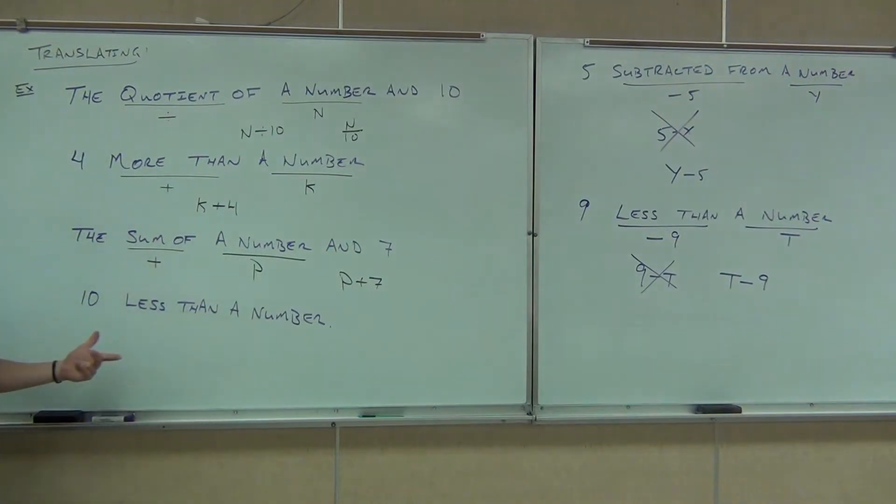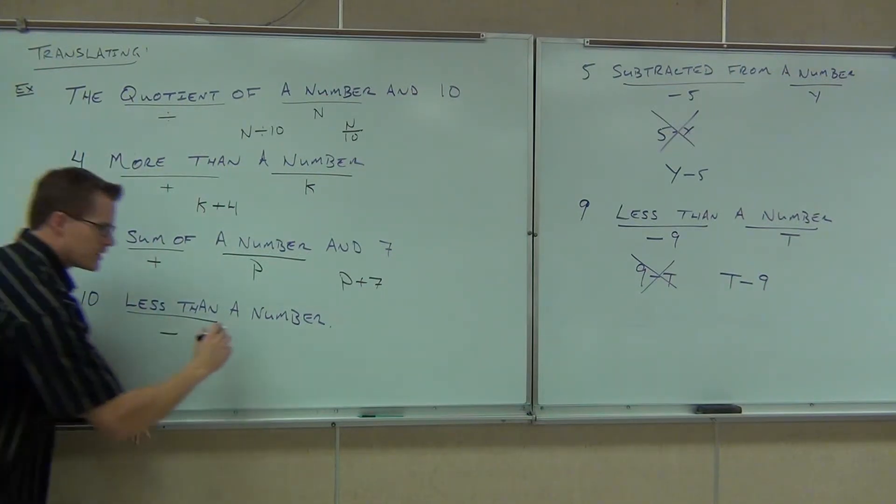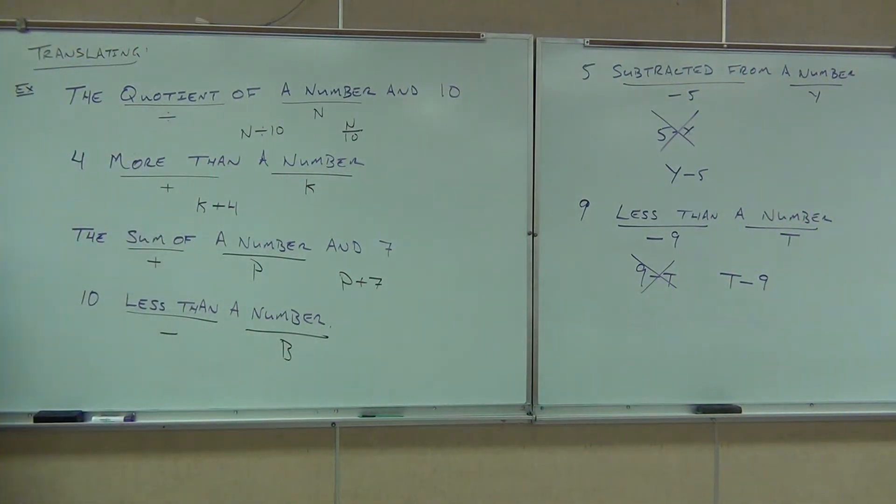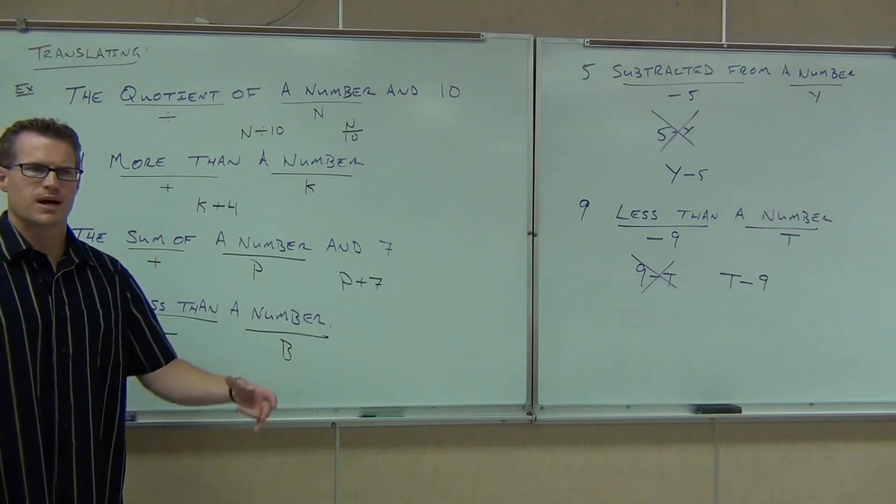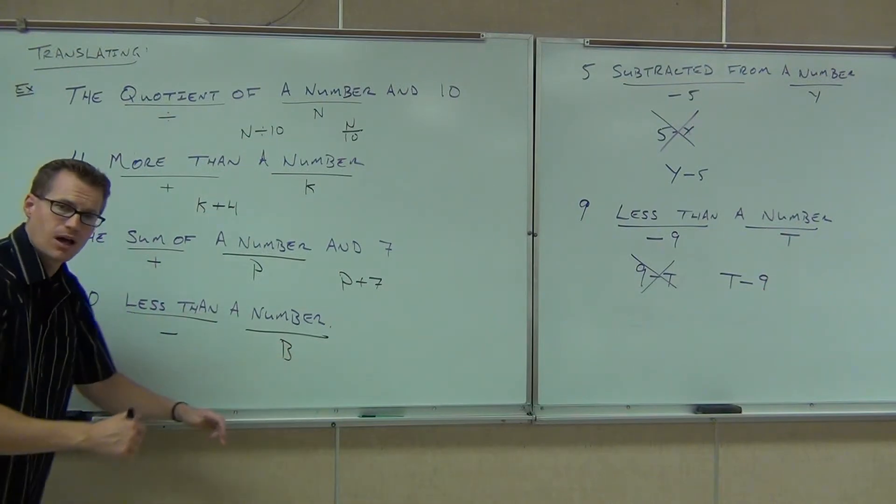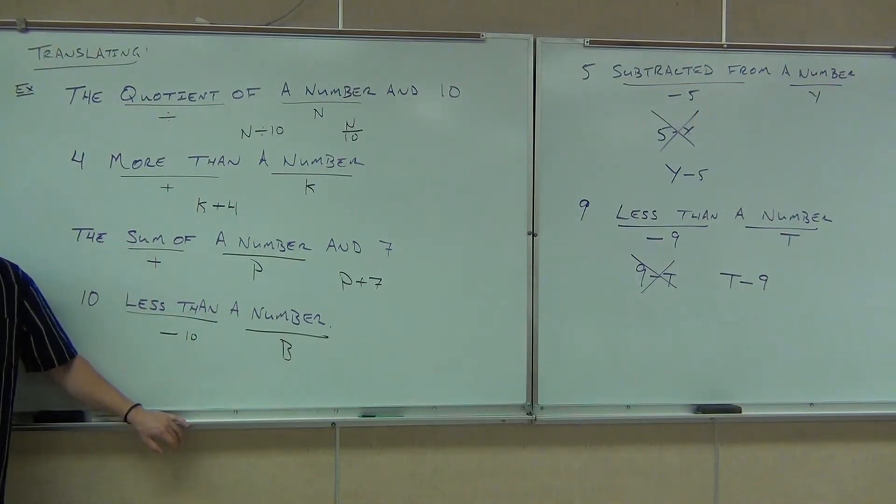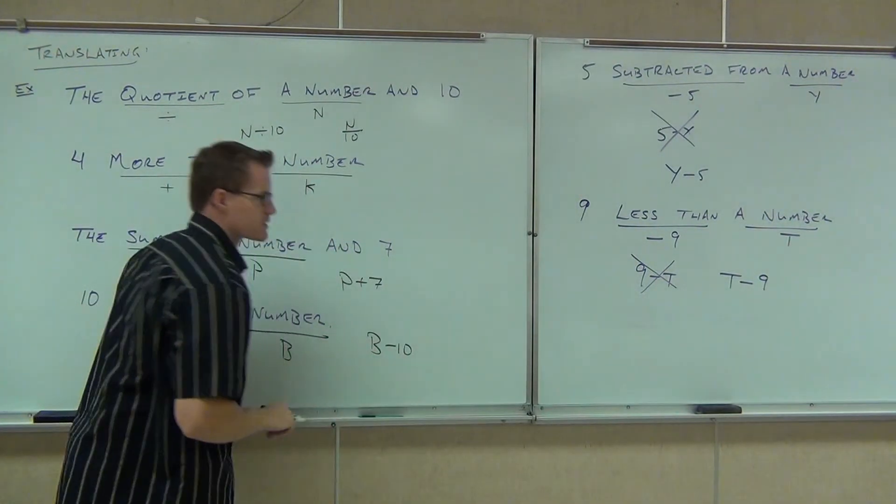Now, the last one that we're going to do: 10 less than a number. This one is the important one on this set. The quotient and the less than. Less than does mean subtraction. A number means anything that you want to pick. How about b? 10 less than a number. Are we going to write this 10 minus b or b minus 10? b minus 10. Very good. The less than comes at the very end of it. For me, I like to think of it as minus 10. That way, it sticks in my head that I'm just going to do b minus 10.